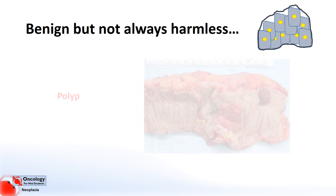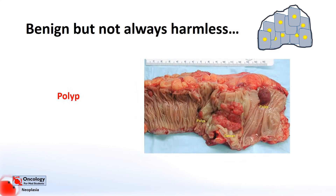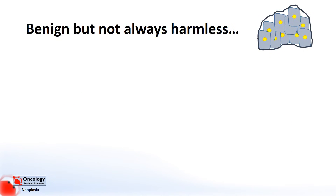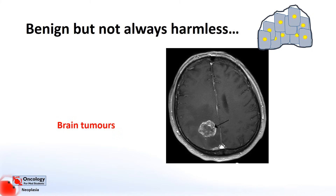Another example is a polyp. Polyps are technically benign tumors, but they can also be precursors to malignant tumors. When cells within these tumors mutate, they can sometimes gain properties which then make them malignant.